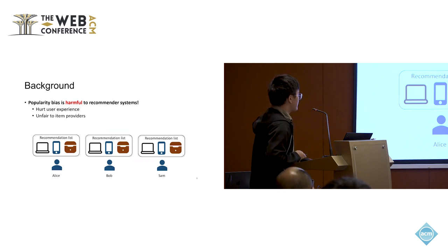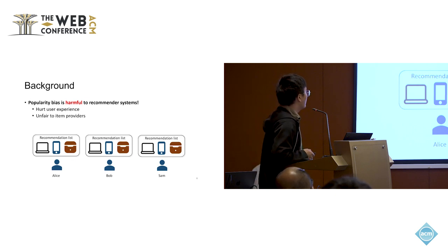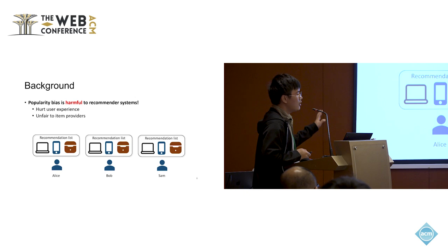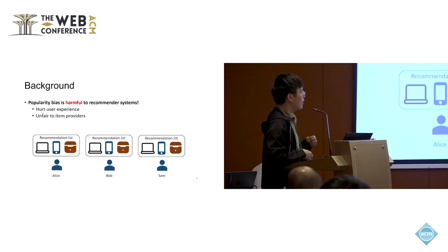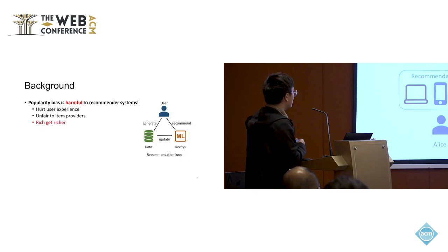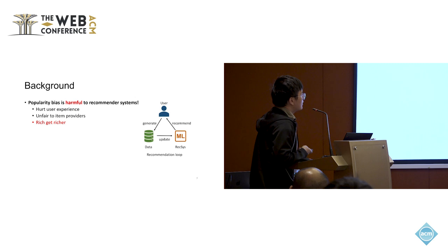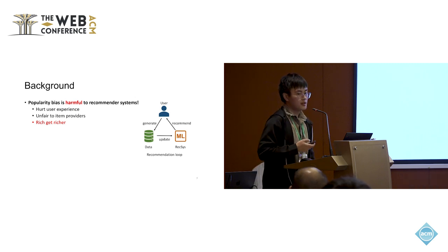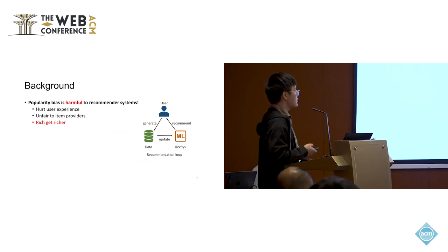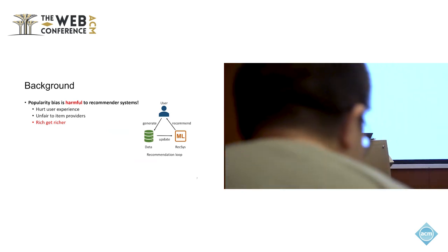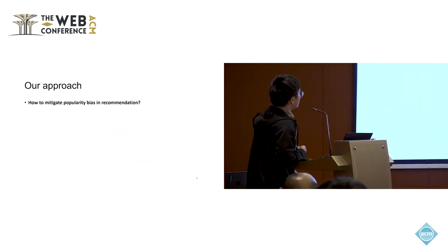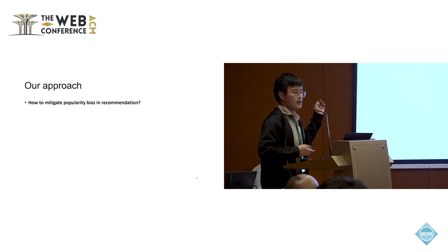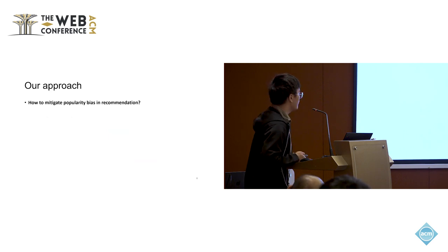Popularity bias is harmful to recommender systems. It hurts user experience and is unfair to long-tail item providers, as recommendations become homogeneous — more and more recommendations are popular items. Additionally, since recommendation is a feedback loop where user data updates the model, which then recommends more items, the popularity bias compounds over time causing a 'richer get richer' effect.